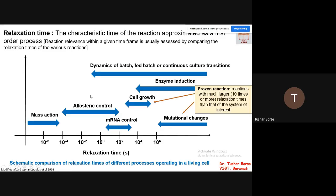There are a few terms which have been defined. One is called frozen reactions — reactions with much larger relaxation times than that of the system of your interest. If you are interested only in cell growth, mutational changes take a very large time compared to cell growth; so these reactions are called frozen reactions. At that time, you can ignore these particular frozen reactions, because the time required for them to happen is very, very large and you cannot be able to estimate or analyze them for cell growth.